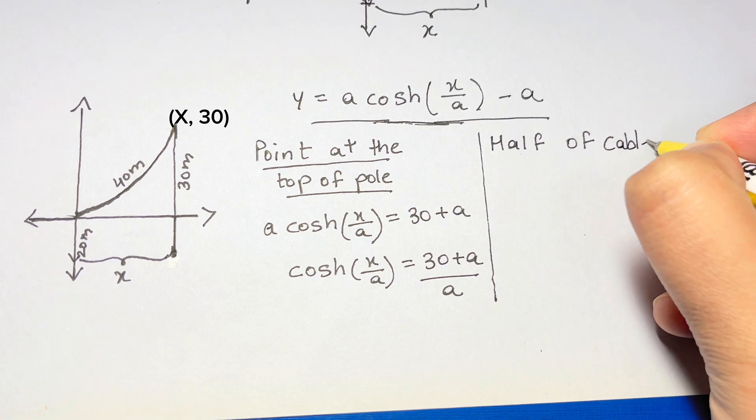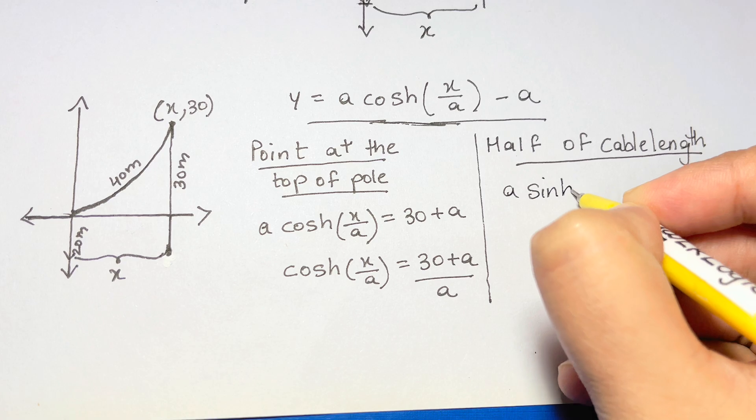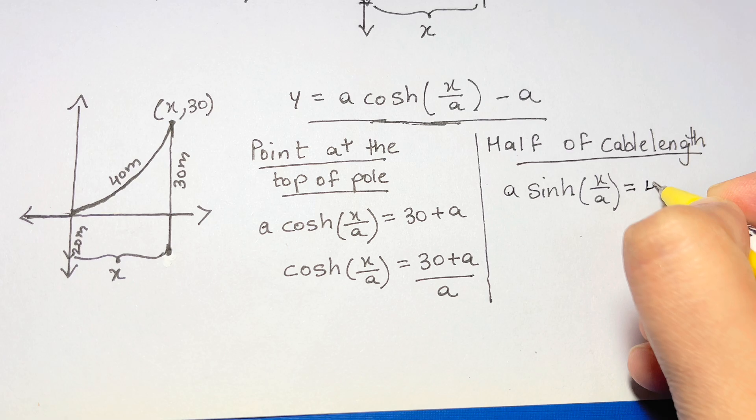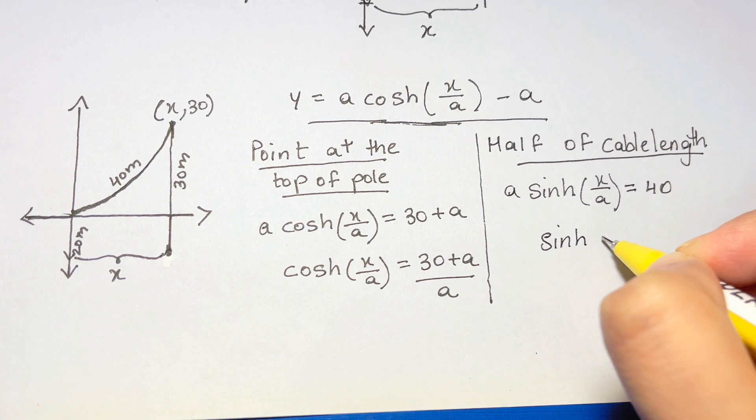Now we have another equation which is using the length of half of the cable. This equation will be a times the sinh of x over a is equal to the length of 40 meters. We'll again divide both sides by a to get the sinh of x over a is equal to 40 over a.